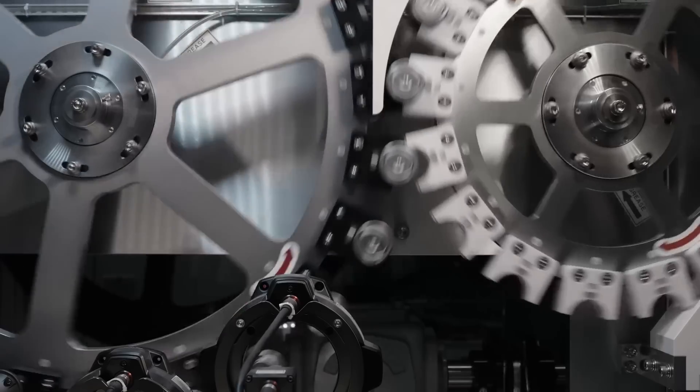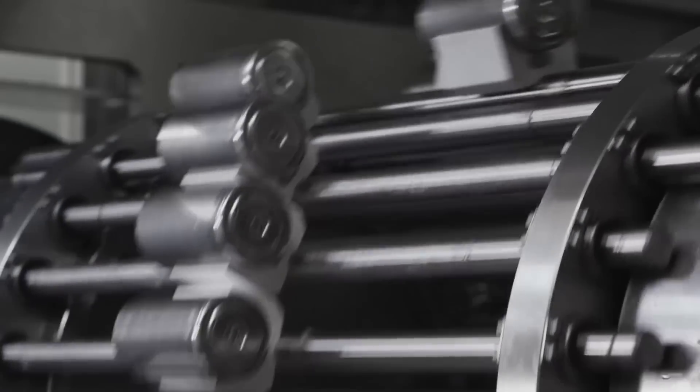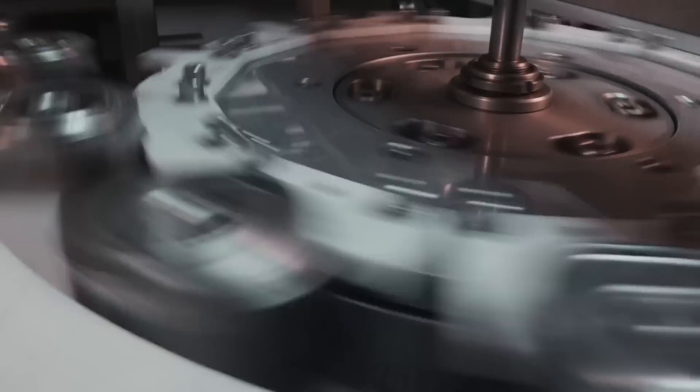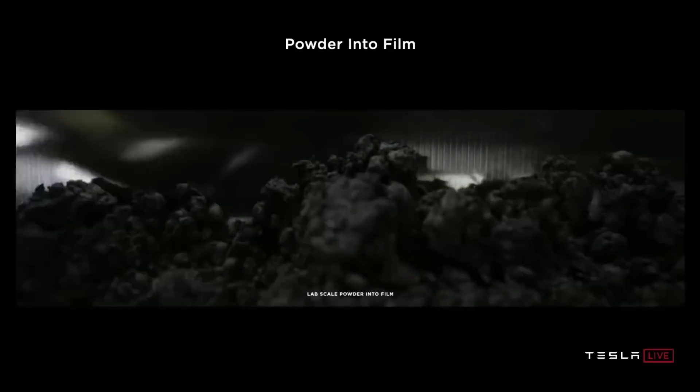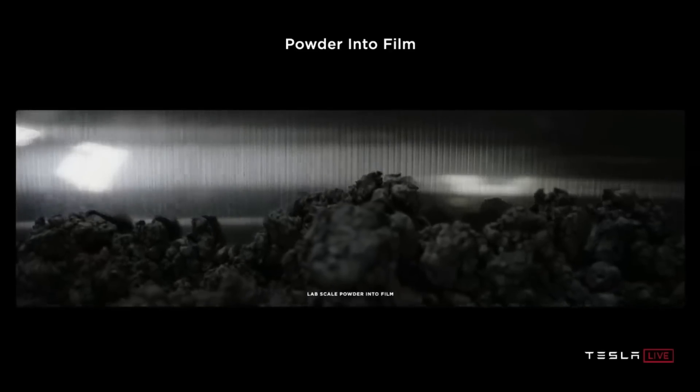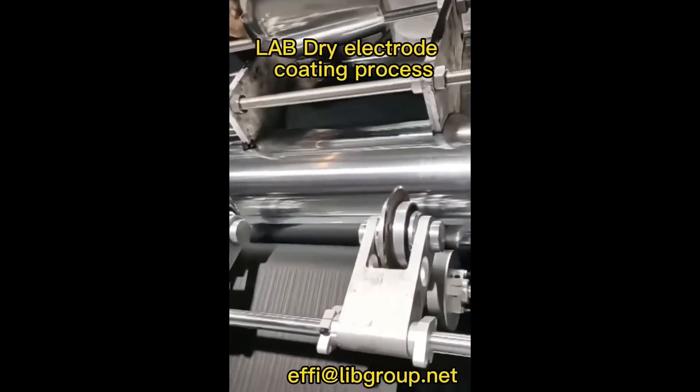What if we could skip the wetting and the drying and just turn that powdered material directly into a solid electrode? That's what Tesla is working out with the 4680. The basic idea is that the powder goes into one end of a roller and a solid sheet of electrode material comes out the other. This is complicated though.